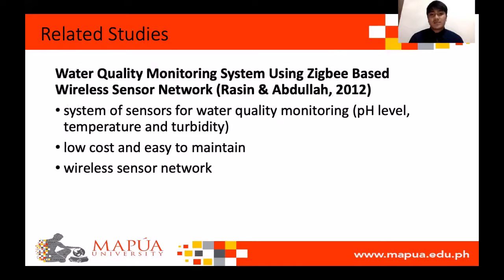The last article is the water quality monitoring system using Zigbee-based sensor network. The researchers were able to create a low-cost and easy-to-maintain system of sensors for water quality monitoring. These water quality parameters include pH, temperature, and turbidity. The use of a wireless sensor network was also presented in this study.